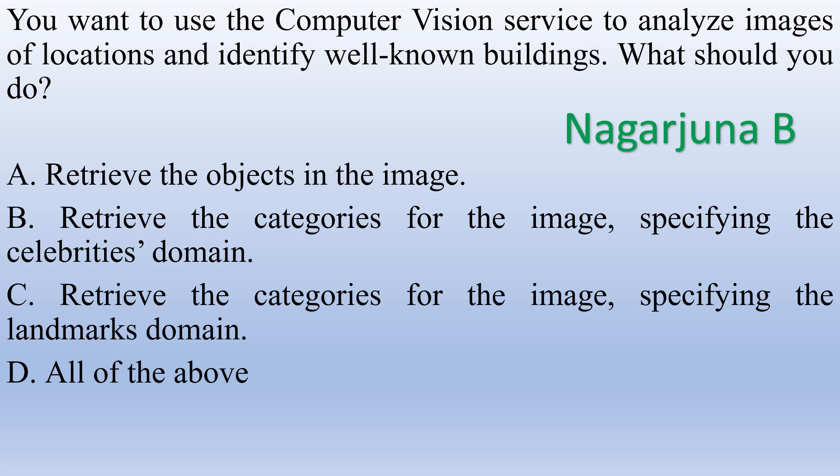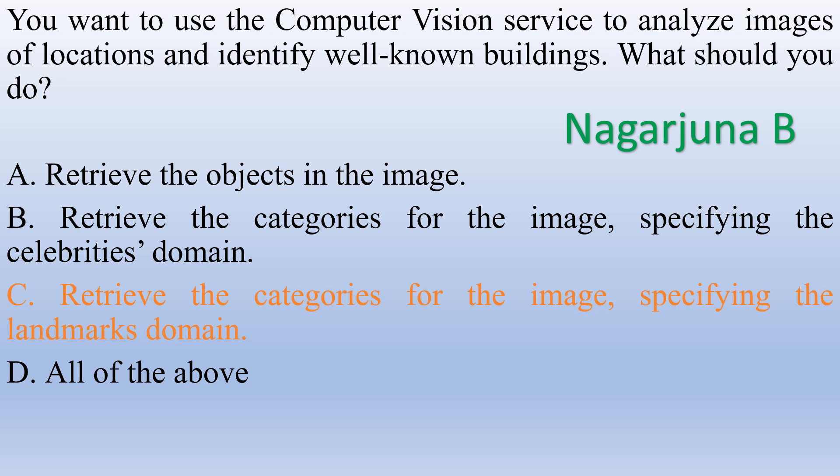You want to use the Computer Vision service to analyze images of locations and identify well-known buildings. What should you do? Option A: Retrieve the objects in the image. Option B: Retrieve the categories for the image specifying the landmarks domain. Option C: All of the above. The right answer is retrieve the categories for the image specifying the landmarks domain.